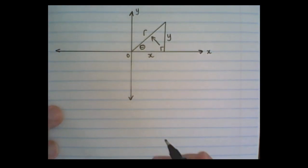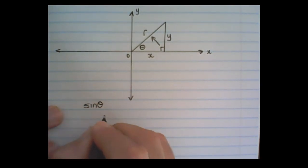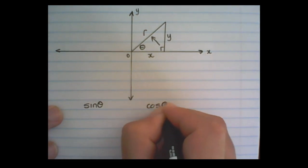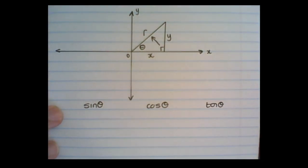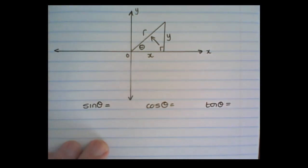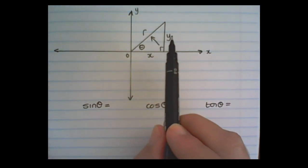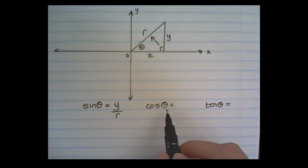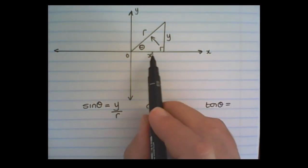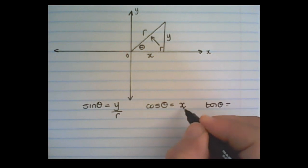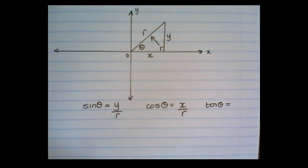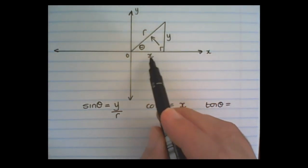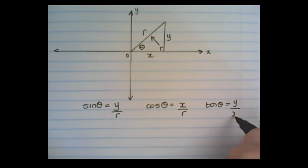That means we can find the ratios for sine, cosine, and tan in that triangle. For sine we have the definition opposite over hypotenuse, so sine would be y over r. For cosine we have adjacent over hypotenuse, so x over r. And for tan we would have opposite over adjacent, y over x.